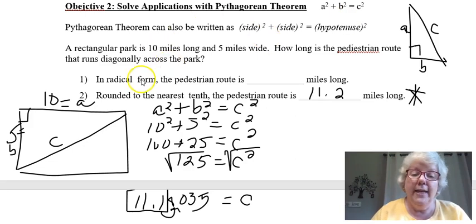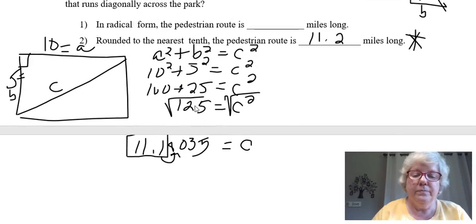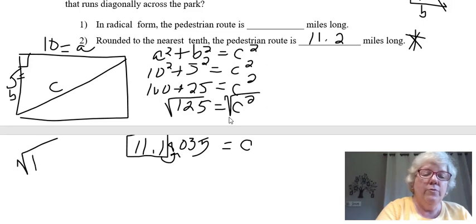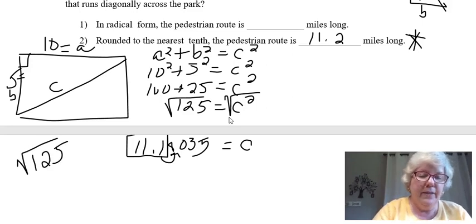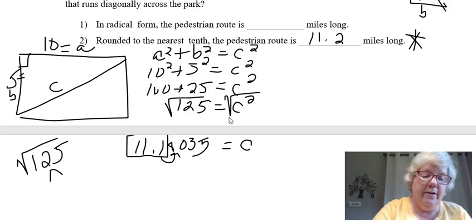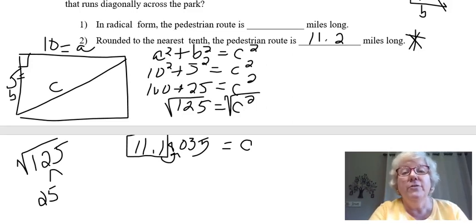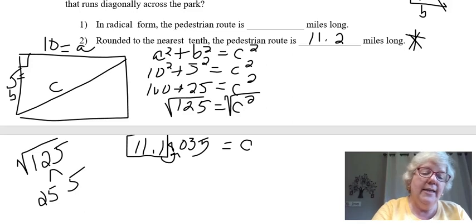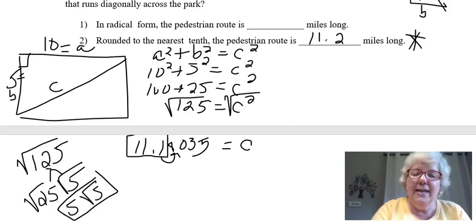But that's not the only answer. We also want that answer in radical form. If you recall, to take the square root of 125, what I can do is divide that number by a perfect square if it's not a perfect square itself. If you think about the perfect squares, 25 is a perfect square, and 125 divided by 25 is 5. So I can break down that 125 as 25 times 5. Now if I take the square root of 25, it's 5, and the other 5 stays under the radical. My second answer then, in radical form, is going to be 5 square root of 5.